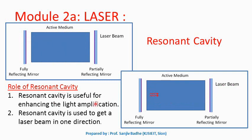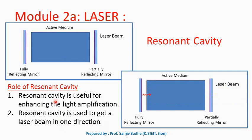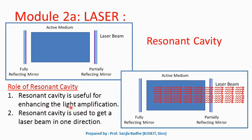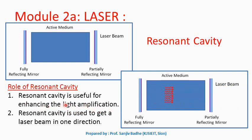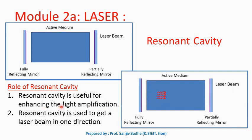This resonant cavity ensures that the laser beam is emitted in only one direction. It is also used for enhancing light amplification, meaning getting more photons. More photons per unit volume means greater intensity, so light amplification enhancement results in higher intensity.